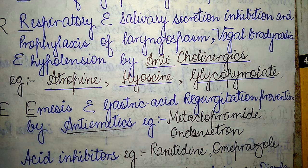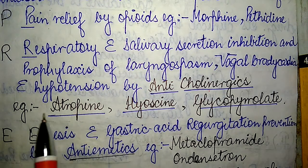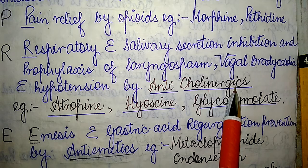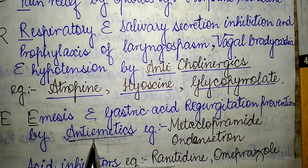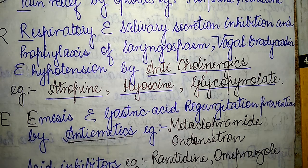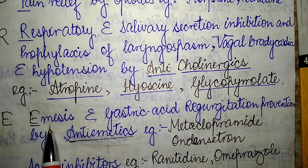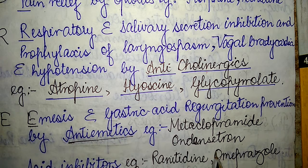To summarize P-R-E: the P refers to pain relief given by opioid drugs such as morphine and pethidine; R refers to respiratory and salivary secretion inhibition and prophylaxis of laryngospasm, vagal bradycardia, and hypotension by anticholinergic drugs; and E refers to emesis and gastric acid regurgitation prevention by anti-emetic drugs such as metoclopramide and ondansetron.